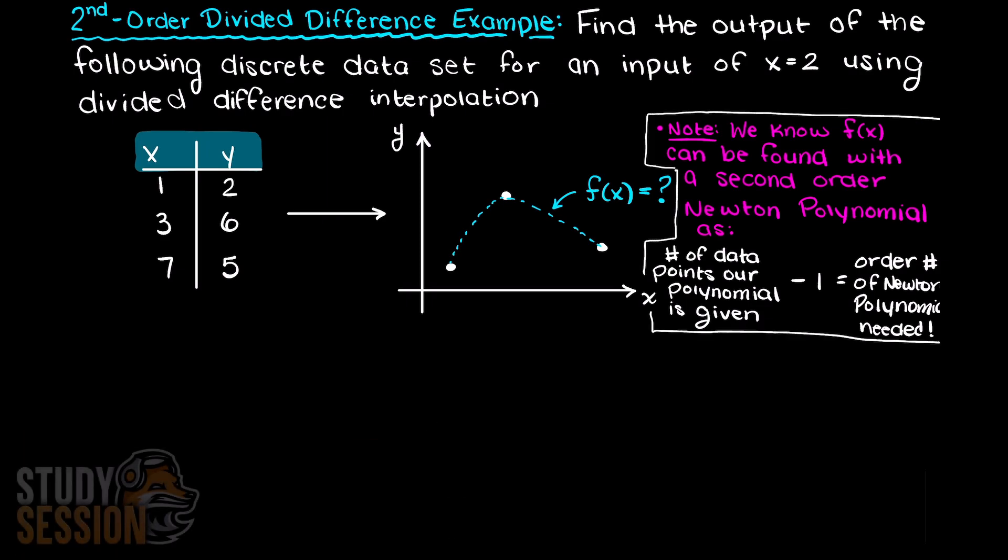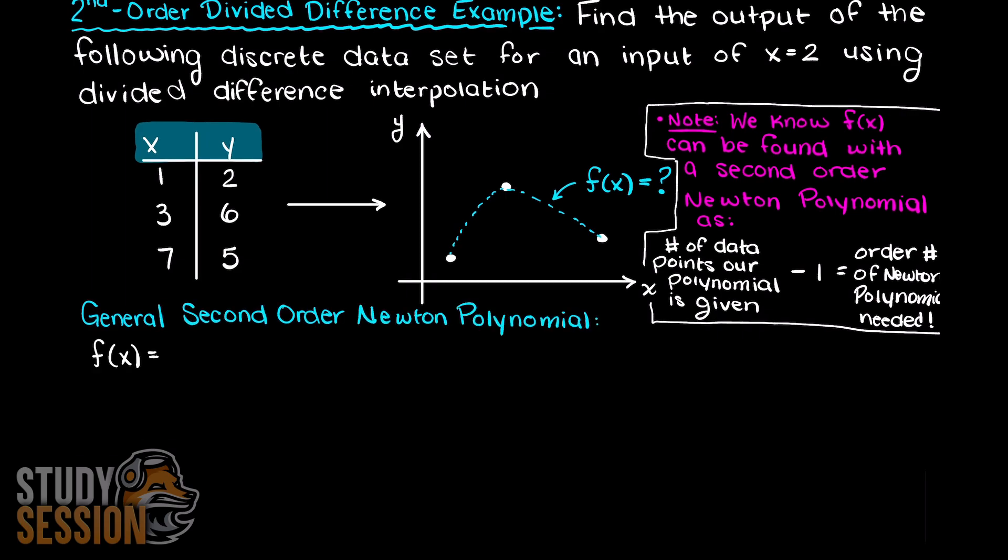Therefore in this problem, since we are supplied 3 data points, we are being asked to solve for a second order divided difference. And to find this we use a second order Newton polynomial.